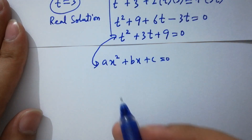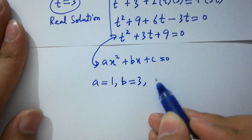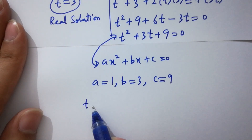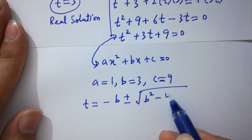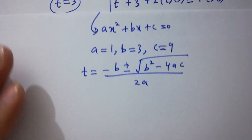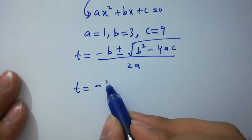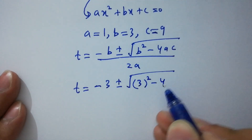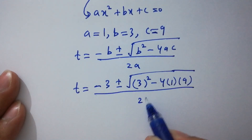By comparing, we have a equals 1, b equals 3, and c equals 9. Applying the quadratic formula: t equals minus b plus or minus square root of b squared minus 4ac, over 2a. Now putting the values: t equals minus 3 plus or minus square root of 3 squared minus 4 times 1 times 9, over 2 times 1.